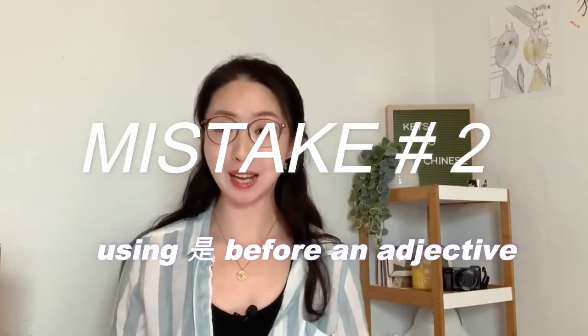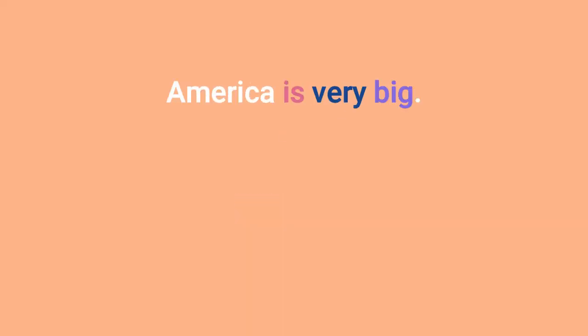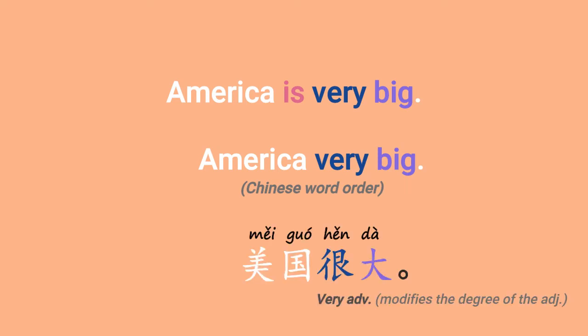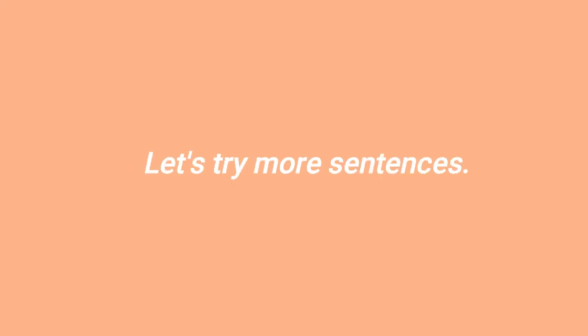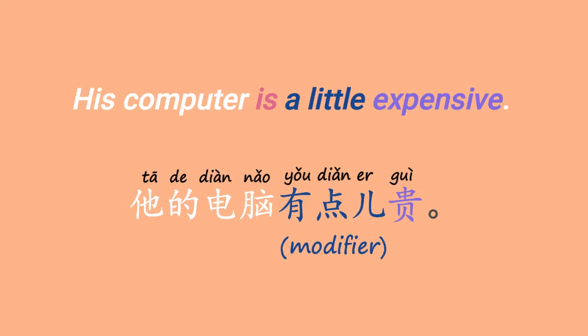Mistake number two: using 是 before an adjective. When we want to use an adjective to describe a subject — for example, 'America is very big' — in Chinese, we don't use 是. We say 'America very big': 美国很大. 很 is an adverb we use to modify the degree of the adjective. Let's try some more sentences: 'My Chinese is not very good' — 我的中文不是很好, where 不是很 is the modifier. 'His computer is a little expensive' — 他的电脑有点贵.